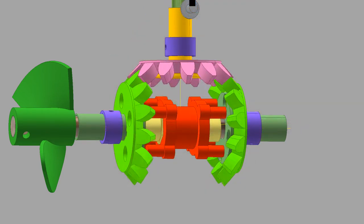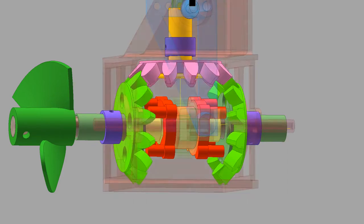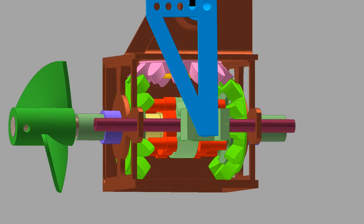The output prop shaft relies on the red pins connecting with the green gear holes in order to start rotating.